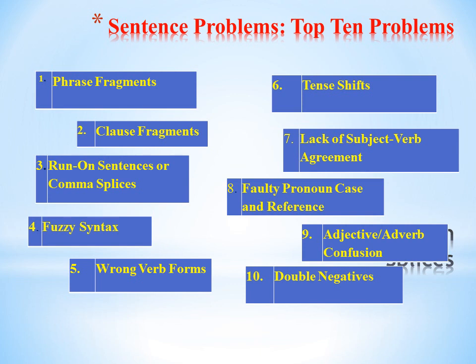Run-on comma splice identification: if two independent clauses run together without any punctuation between them, the error is called a run-on or fused sentence. If only a comma appears between them with no coordinating conjunction, the error is called a comma splice. A comma splice also occurs when a comma and a transitional expression join two independent clauses. You can correct run-on comma splices in the following ways: separate the two clauses into two sentences with a period; separate them with a semicolon; separate them with a comma and a coordinating conjunction; make one clause dependent by adding a subordinating conjunction; or make one clause into a phrase containing an -ing form and attach it to the remaining independent clause.